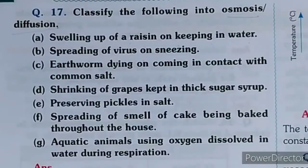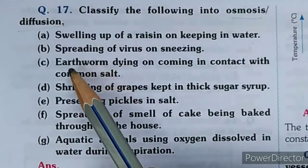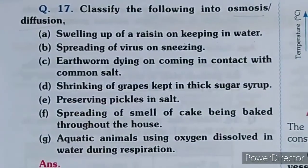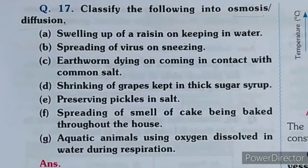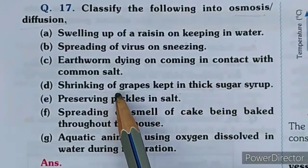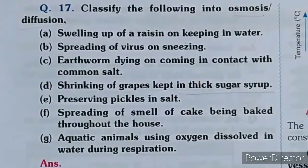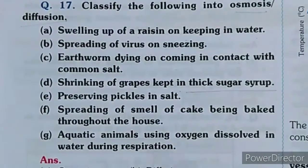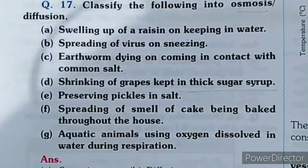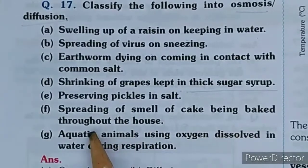Next, earthworm dying on coming in contact with common salt - earthworm dies because water loss occurs due to osmosis. Shrinking of grapes kept in thick sugar syrup - grapes shrink due to osmosis because of water loss.